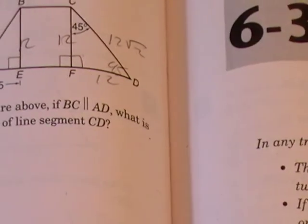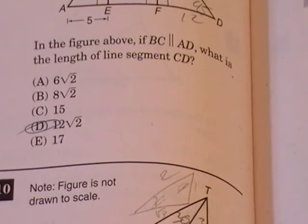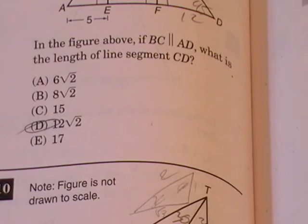Which is closest to option D, 12 times square root of 2, and that is the answer.